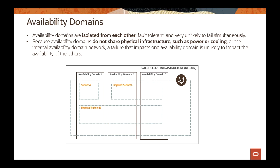Of course, there's all the configuration you have to do on the application and software layer to make the failover go from one AD to another. As a customer, you are responsible for deploying the application in HA mode. But OCI gives you that infrastructure ready for deployment. From an on-premises perspective, you don't have to procure another data center to deploy in an HA fashion. When moving to the cloud, the infrastructure is already provided — all you have to do is design or move your application to support high availability mode.